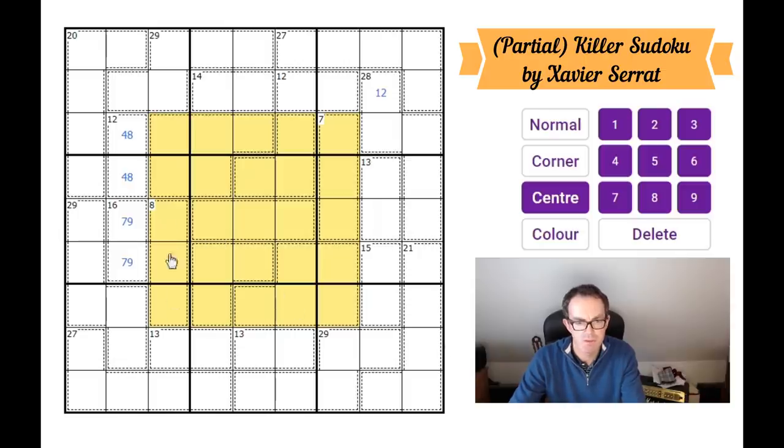We've got two cages here. Ah, right. OK. So these two cages add up to 15. This central box would add up to 45. So if I add up all of these yellow squares, I'll get 60. Now that means, I guess, that these squares add up to 27.